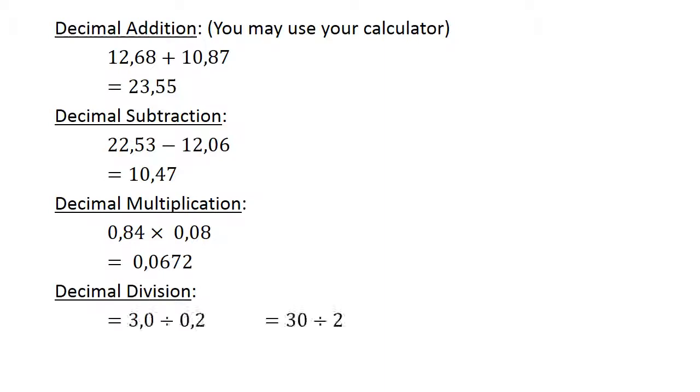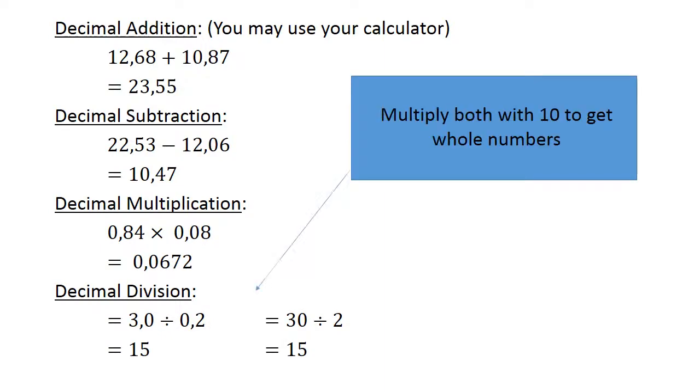Decimal division. 3.0 divided by 0.2. Multiply both by 10 to get whole numbers. 30 divided by 2 equals 15.